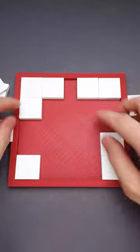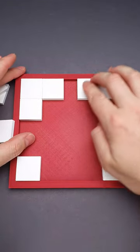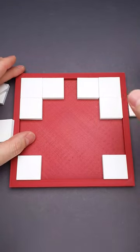You start solving the puzzle by putting three parts in this corner, which looks absolutely normal. Then you add three parts in this corner, which looks normal as well.